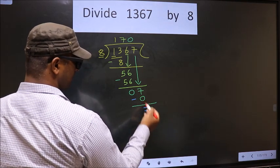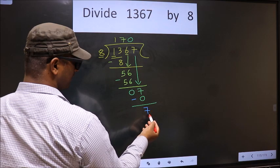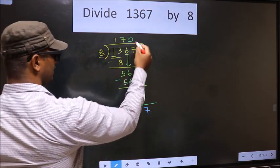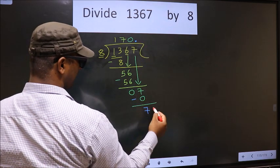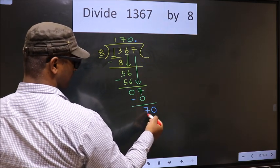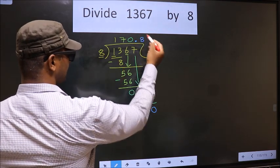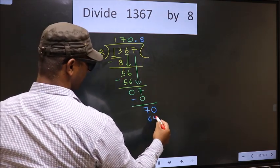Over here we did not bring any number down, and 7 is smaller than 8. Now you can put a dot and take 0 here. So 70. A number close to 70 in 8 table is 8 eights, 64.